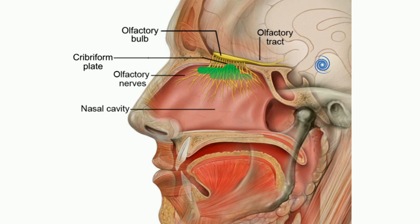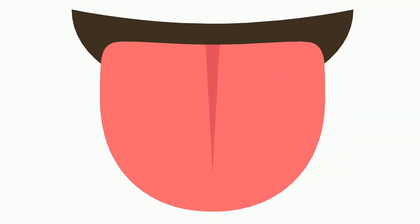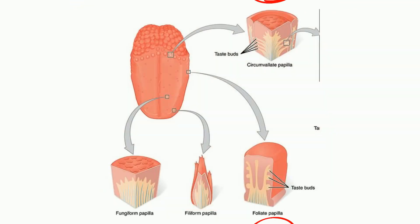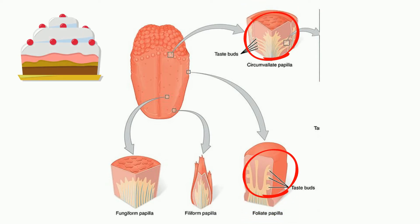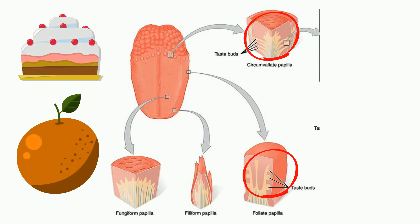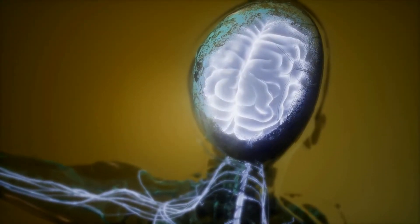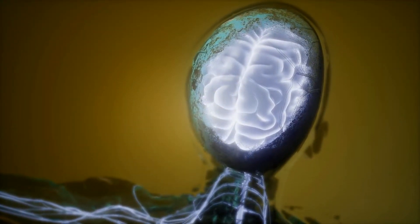Your tongue is covered with bumps called papillae that contain taste buds. Some taste buds detect sweet and others detect bitter, but they both work together to help you taste. These receptors send taste information along cranial nerves to your brain.